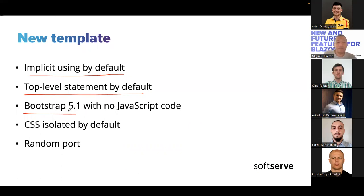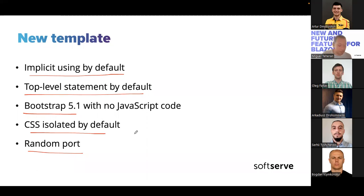We have CSS isolation by default — that's another important highlight. And random port assignment: when you create the application, it's going to assign a different port for every new application. In the past we had problems because if you created two Blazor applications, they would conflict running at the same time. Now we don't have that problem. Let's see these features in the code.